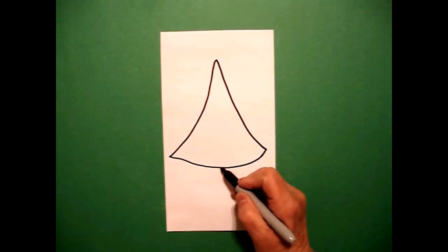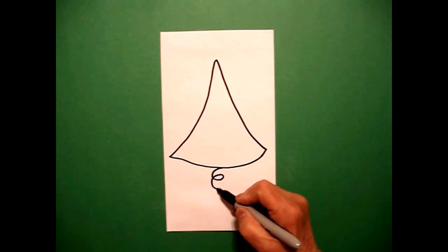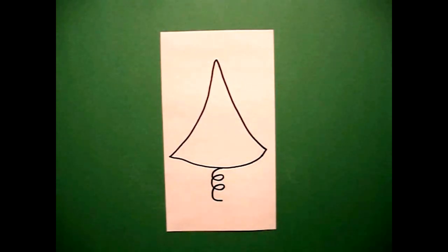Right here at the bottom, I'm going to do a spiral. So I go loop, de-loop, de-loop and stop.